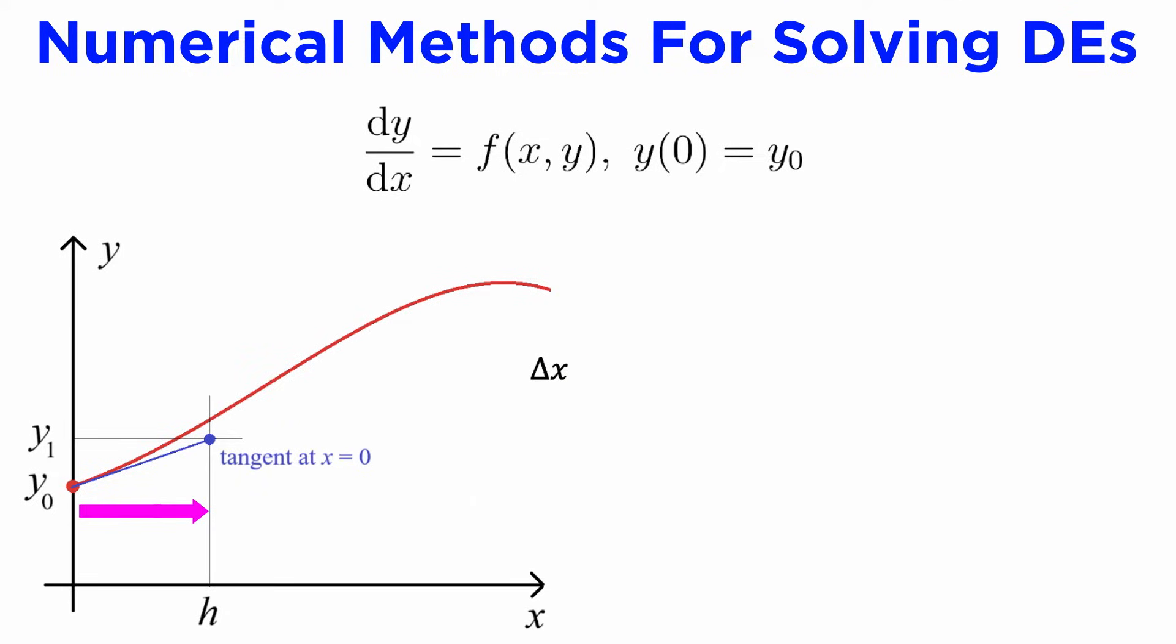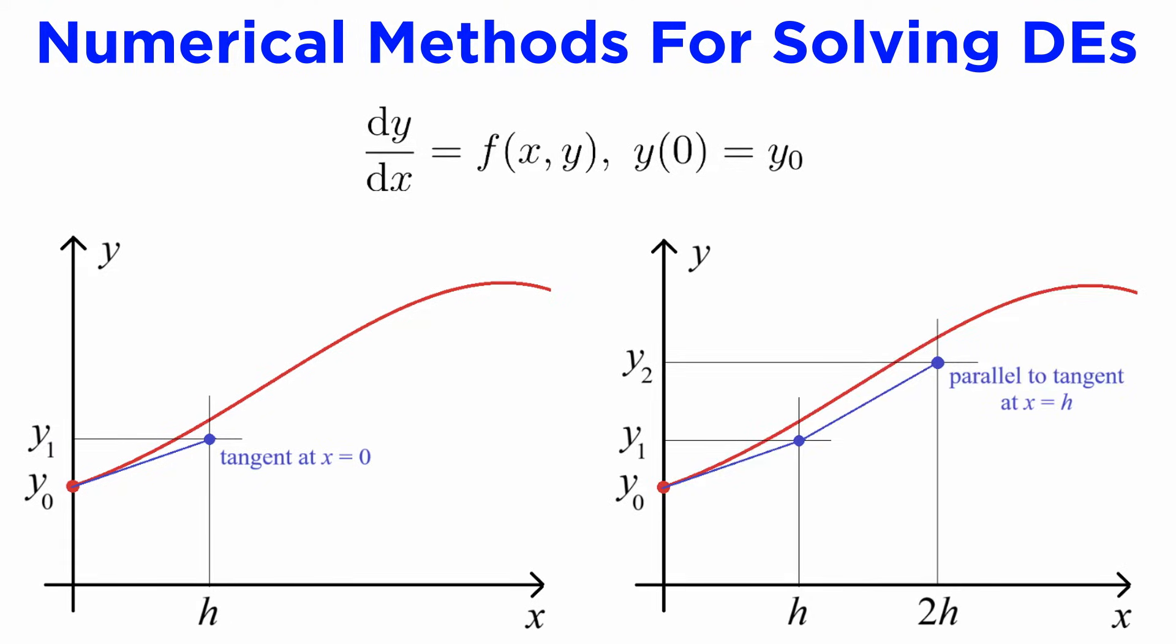We can therefore take a tiny step to the right, call it h, and using the gradient equals rise over run formula, the resulting change in y on the tangent line will be f(0, y₀) times h. The new y coordinate is then y₀ plus h times f(0, y₀), and we can use this as our new starting point and repeat the process, drawing a new tangent line, extrapolating the change in y, and adding to our current approximation.